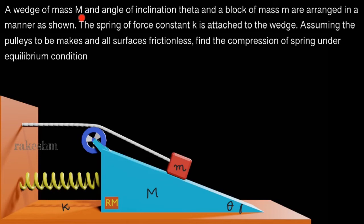There is a wedge of mass capital M and angle of inclination theta. This is a wedge of mass M. Its angle of inclination is theta.